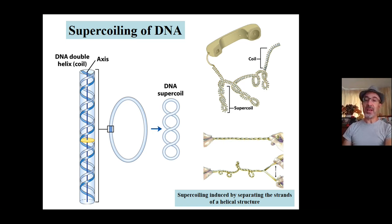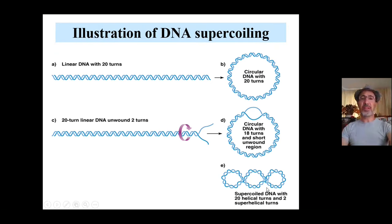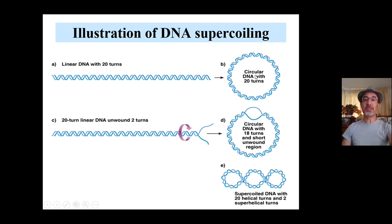Once you release the strain, the supercoiling will be removed from either side — unless you connect the ends and generate a circular DNA molecule. At that point, you have a topoisomer having a specific geometrical property. Here I'm showing again the illustration of DNA supercoiling. On the top, you have a linear DNA molecule with 20 turns — let's assume this is the B-DNA form. By connecting the ends, you generate a circular DNA molecule having 20 turns, and this molecule is relaxed by definition.